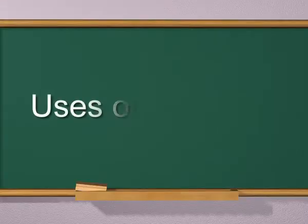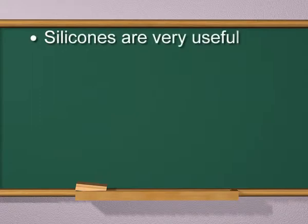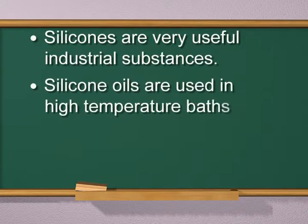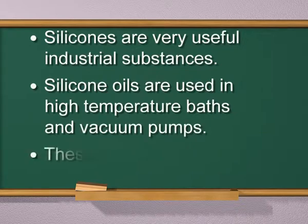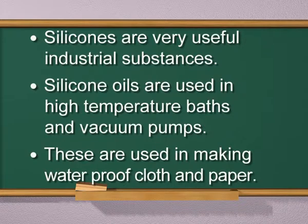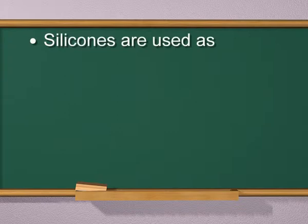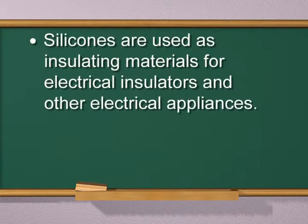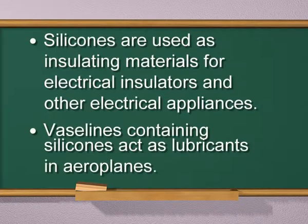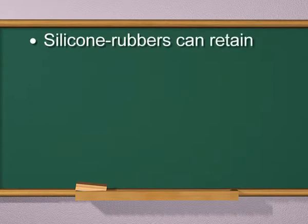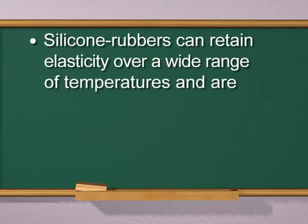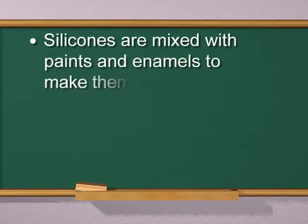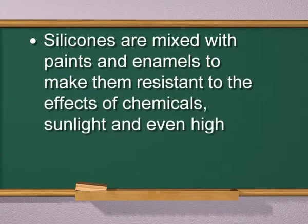Silicones are used in high temperature baths and vacuum pumps. They are used in making waterproof cloth and paper. Silicones are used as insulating materials for electrical insulators and other electrical appliances. Vaseline containing silicones acts as lubricant in aeroplanes. Silicone rubbers can retain elasticity over a wide range of temperatures. Silicones are mixed with paints and enamels to make them resistant to the effects of chemicals, sunlight and even high temperature.